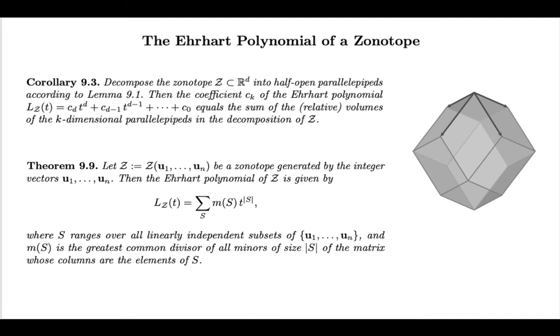Then we'll take any two of those generators and compute the minors of each two-by-three matrix, and then the GCD of those minors, and we'll sum those GCDs. That will give me the quadratic coefficient. The linear term will be the sum of the GCD of the entries of each vector, and then the constant term will be one.